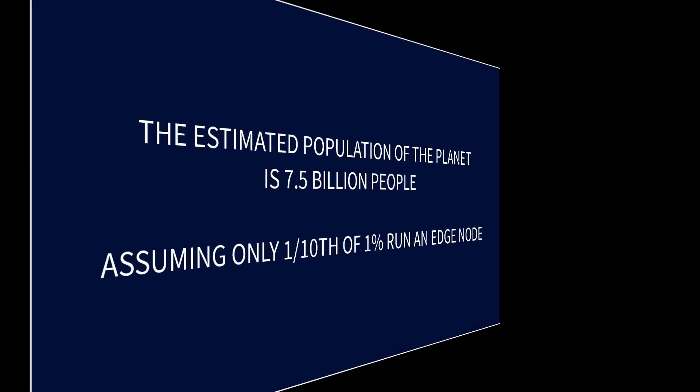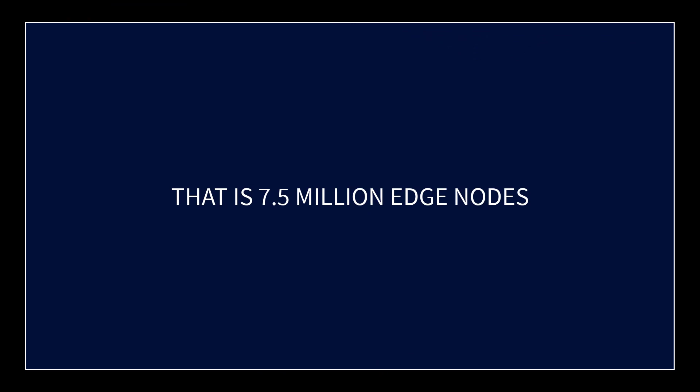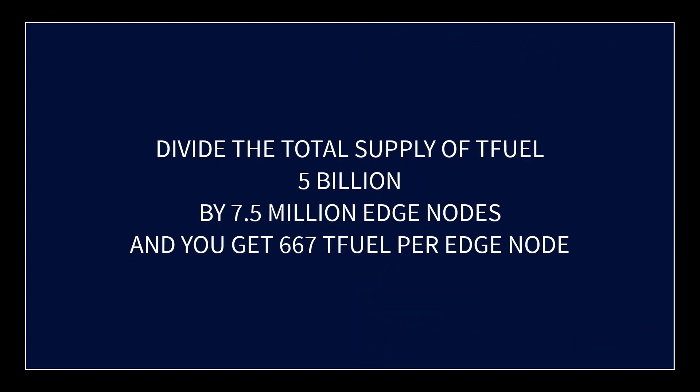The estimated population of the planet is 7.5 billion people. If only one tenth of one percent — that's one out of a thousand — actually run an edge node, we're looking at a total of 7.5 million edge nodes planet-wide. Divide the total supply of T-Fuel by 7.5 million edge nodes and you get 667 T-Fuel per edge node, meaning the entire supply is now in the hands of those 7.5 million edge node operators.